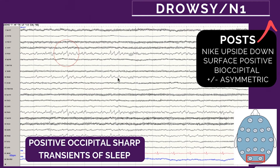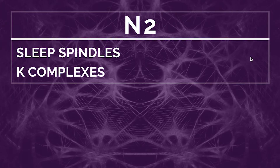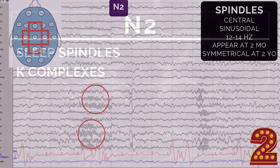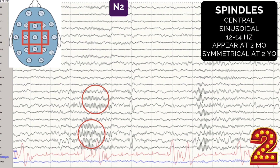When you see POSTS, the patient needs to be drowsy — if you see them during wakefulness, they're not technically POSTS. Moving on to N2 stage sleep, a non-REM stage. If you see sleep spindles and/or K-complexes, it automatically means the patient is in N2. This is an EEG page of a patient in N2, and I'm going to tell you about the 'two rule' mnemonic.